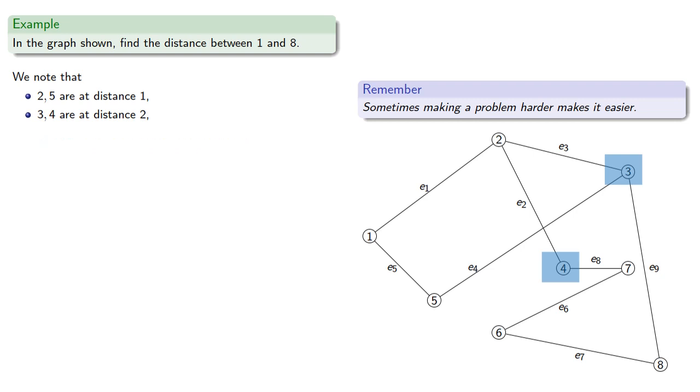Expanding further, there are two vertices, 7 and 8, that are at distance 3. Finally, there's one vertex at distance 4. So the distance between 1 and 8 is 3. Incidentally, we've found the distances between 1 and any other vertex, and we've also found a geodesic.